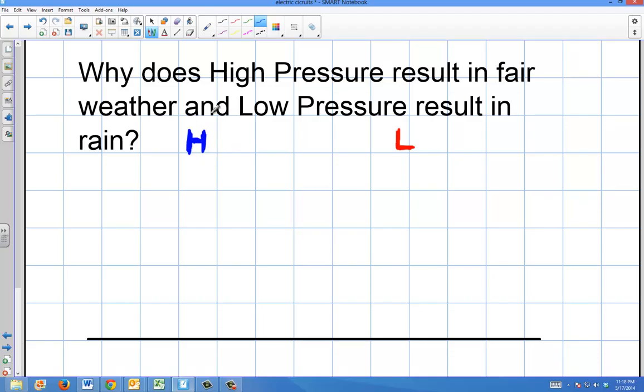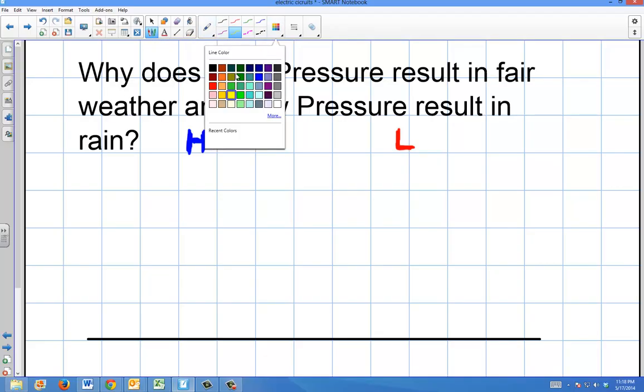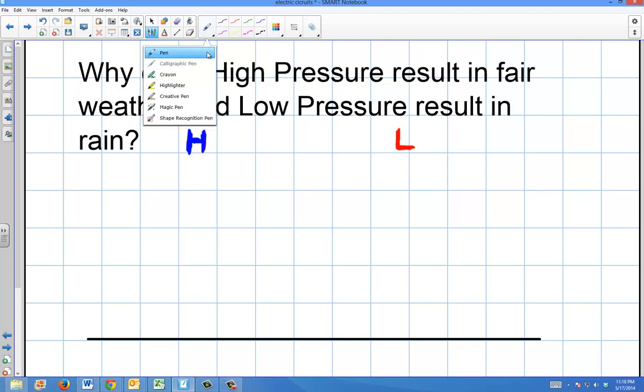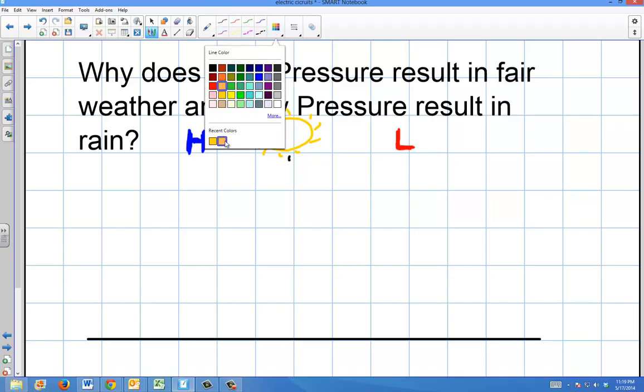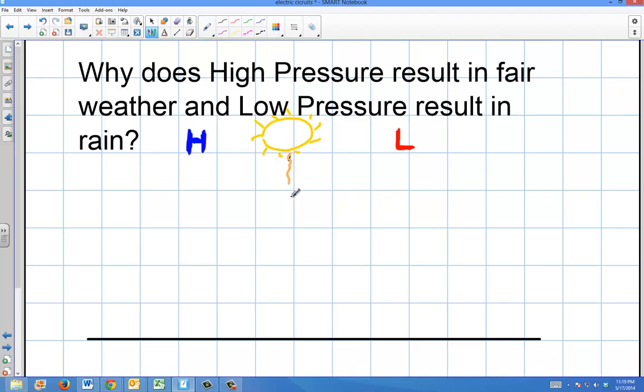The reason is that high pressure is going to put more atmospheric pressure down upon the Earth. What happens is, you have the sun here, and the sun will basically radiate down onto the Earth. So it's going to send these rays down to the Earth.